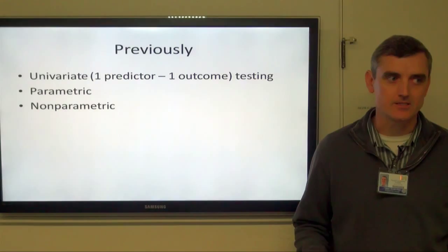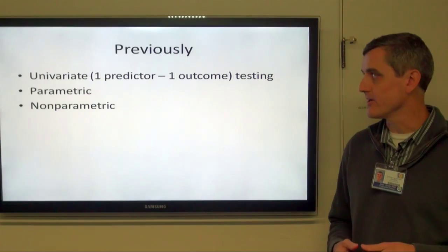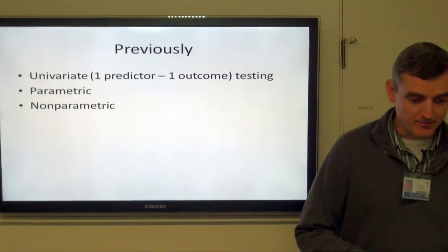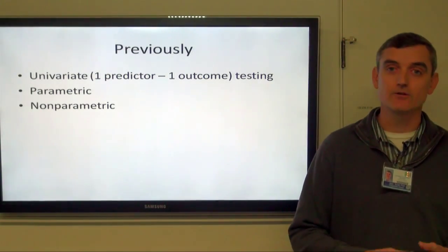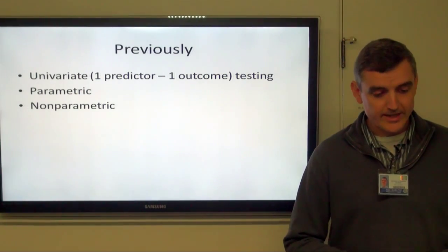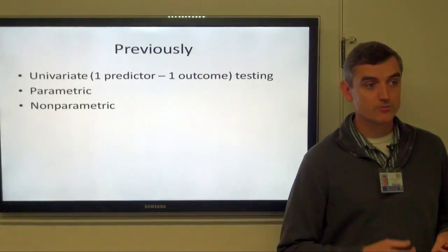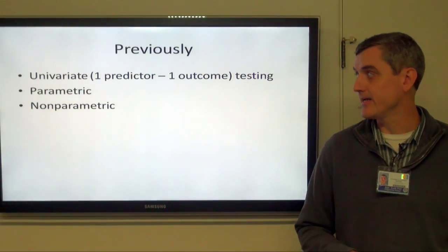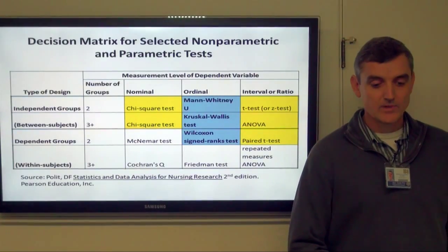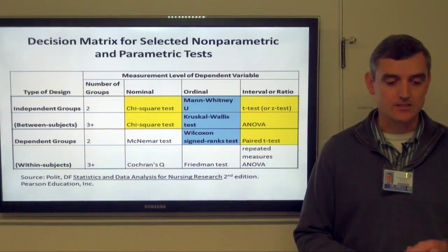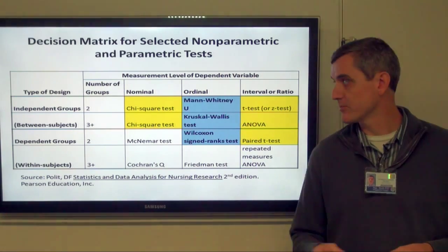Previously we've talked about univariate statistics — when you have one predictor or independent variable and one outcome or dependent variable. We talked about things like the t-test and ANOVA, which are parametric tests when your data fits certain parameters. When they don't fit those parameters, we do non-parametric tests. We have a whole decision tree on which test is appropriate according to the type of variables you have and the number of groups you're comparing.